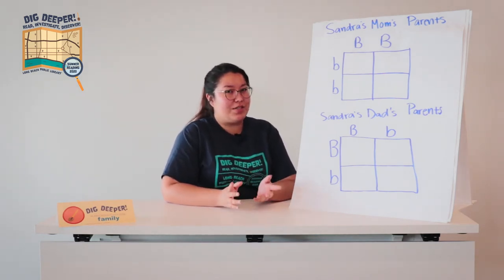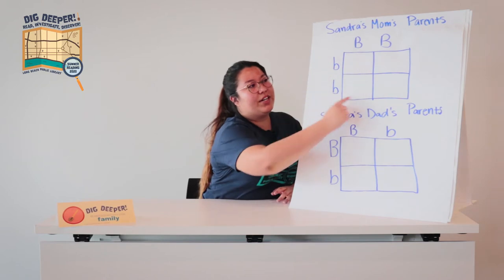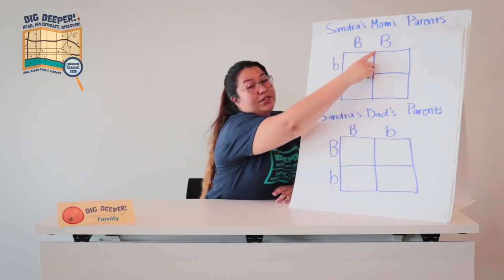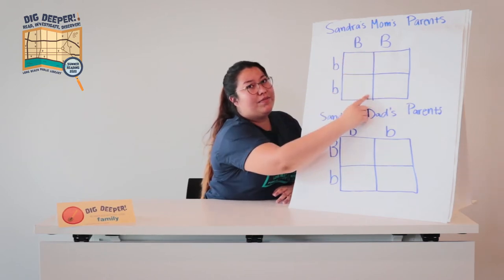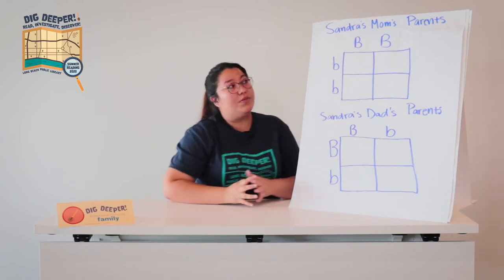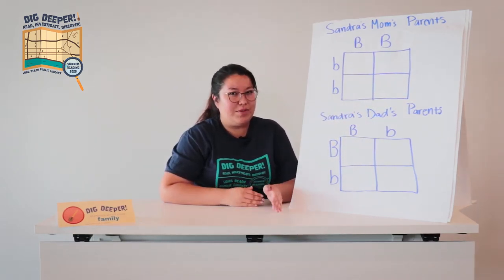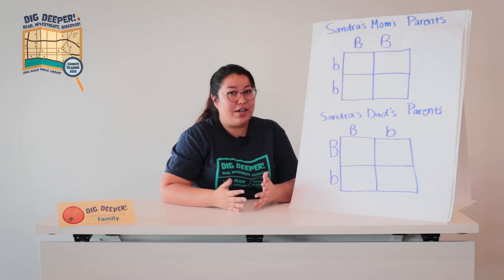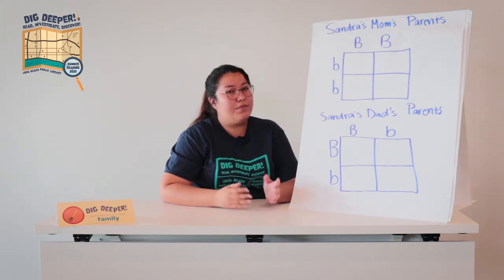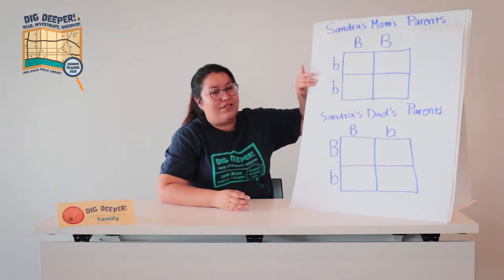To draw a Punnett square, it's pretty easy — it's just a regular square with a line drawn down the middle from top to bottom and from left to right. We're actually going to start with Sandra's grandparents, and we'll do her mom's side first.